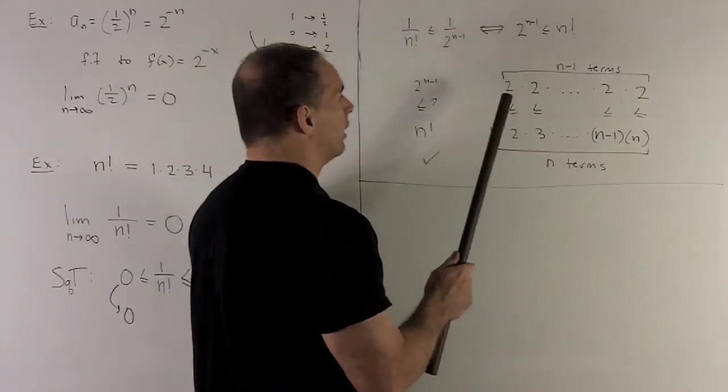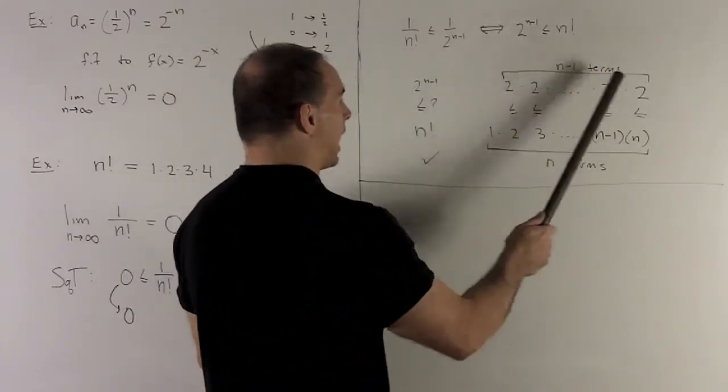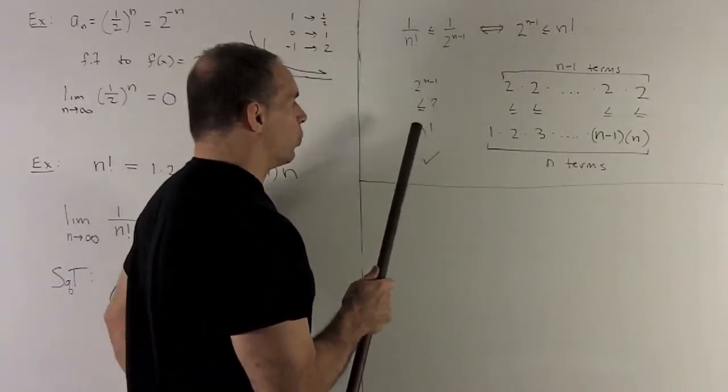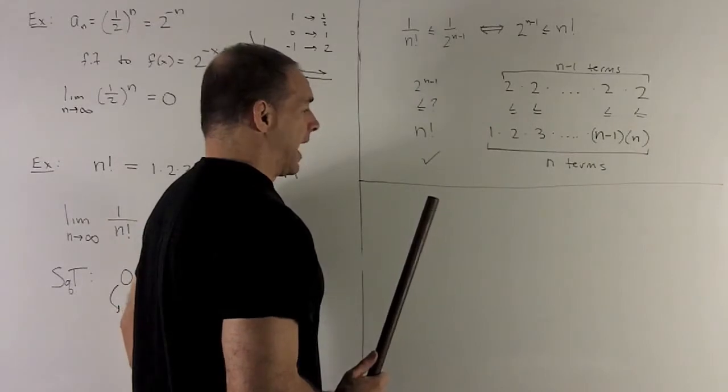Well, this is going to be 2 times itself, n minus 1 times. On the bottom, we have n factorial, which is 1 up through n multiplied out.